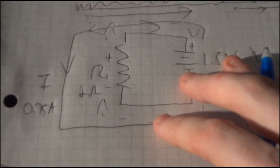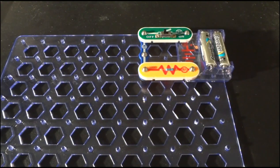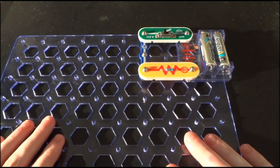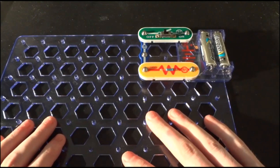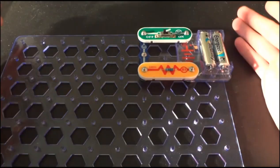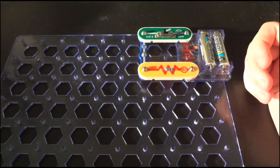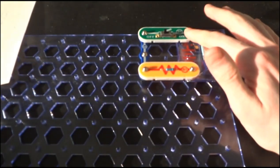So let's apply this to an actual circuit. So here I've got the snap circuits that I showed in a video earlier about its unboxing and whatnot. And I've set up a generic circuit here very similar to the one that I drew on the paper here. The only difference is that I've added a switch.